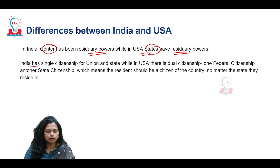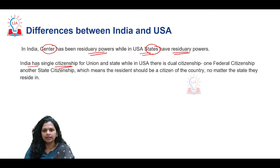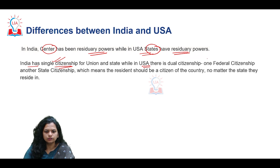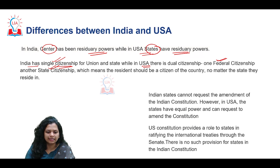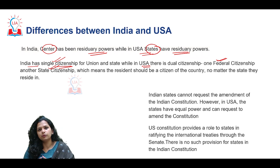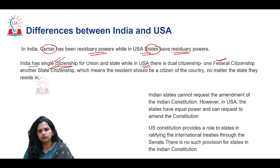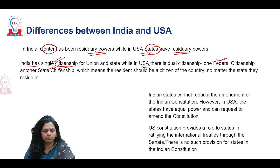India is known for single citizenship. In the United States, there is citizenship for the federal level and one for the individual states, meaning there is allegiance to both the country and to the state you belong to. India opted for single citizenship because the states did not originally want to form the Indian Union, and even today there is concern that some states might want to secede. Hence these safeguards in terms of citizenship were put in place.